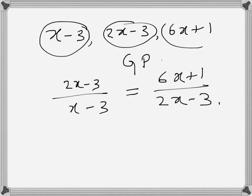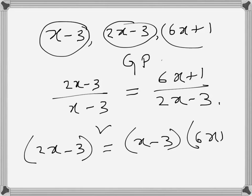So this one and then x minus 3 times 6x plus 1. So this is 4x square minus 12x plus